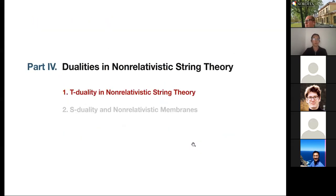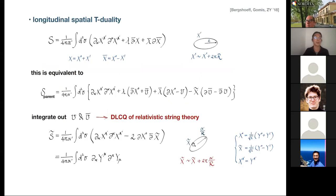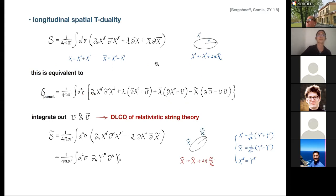Let's move on to discuss dualities in non-relativistic string theory. Even though we're talking about open string theory, I'd like to first go back to the closed string side and discuss T-dualities from first principles, and then apply the same idea to the DBI action. Let's revisit the idea of T-duality between non-relativistic string theory and the DLCQ of relativistic string theory.